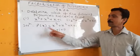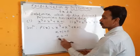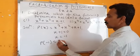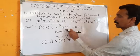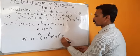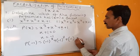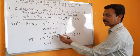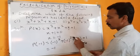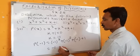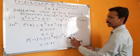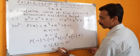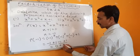I will place x equals minus 1 in P of x. It becomes P of minus 1: minus 1 whole cube plus minus 1 whole square plus minus 1 plus 1. Minus 1 cubed is minus 1 because the power is odd. Minus 1 squared is plus 1. So we get: minus 1 plus 1 is 0, and minus 1 plus 1 is 0.